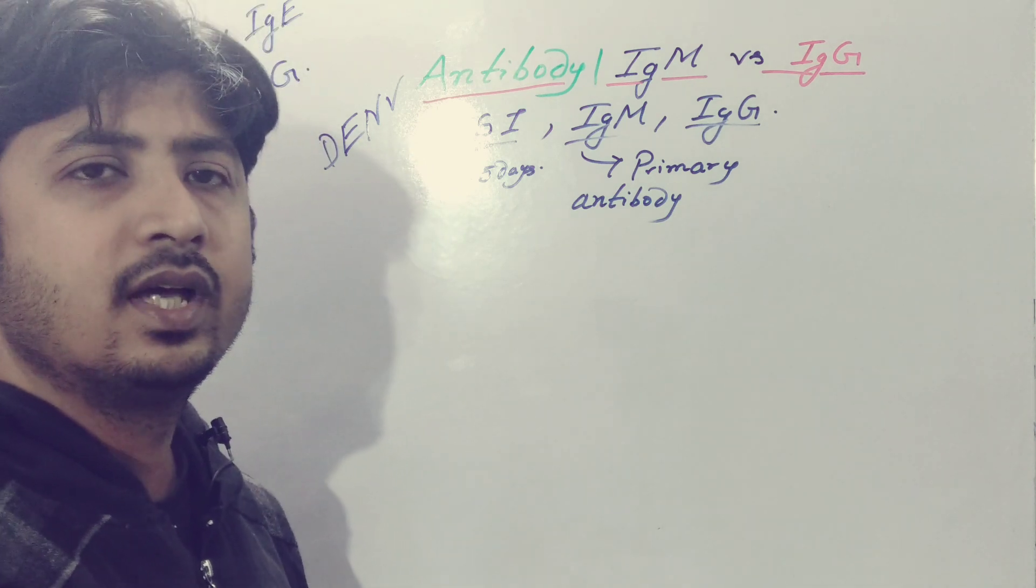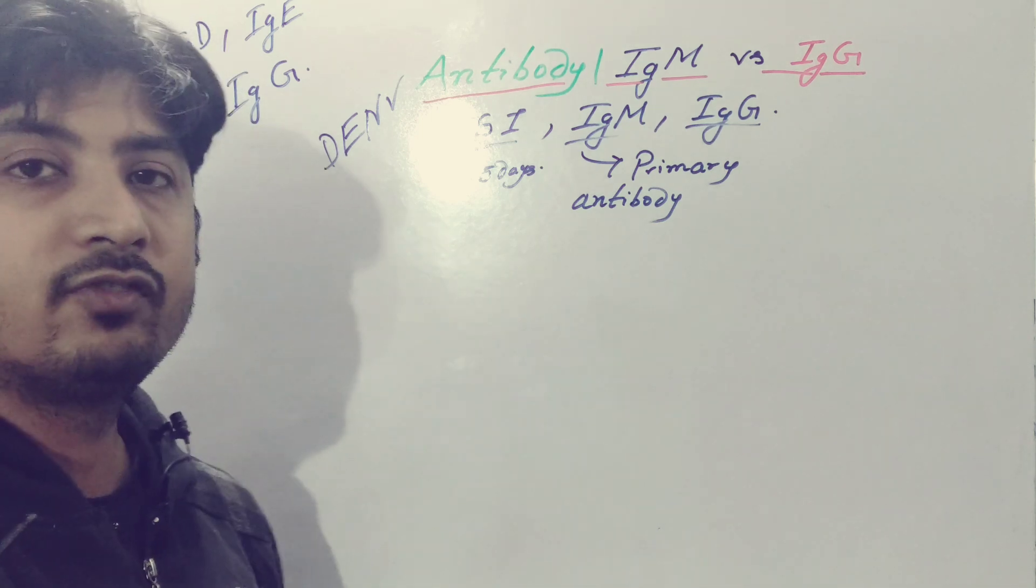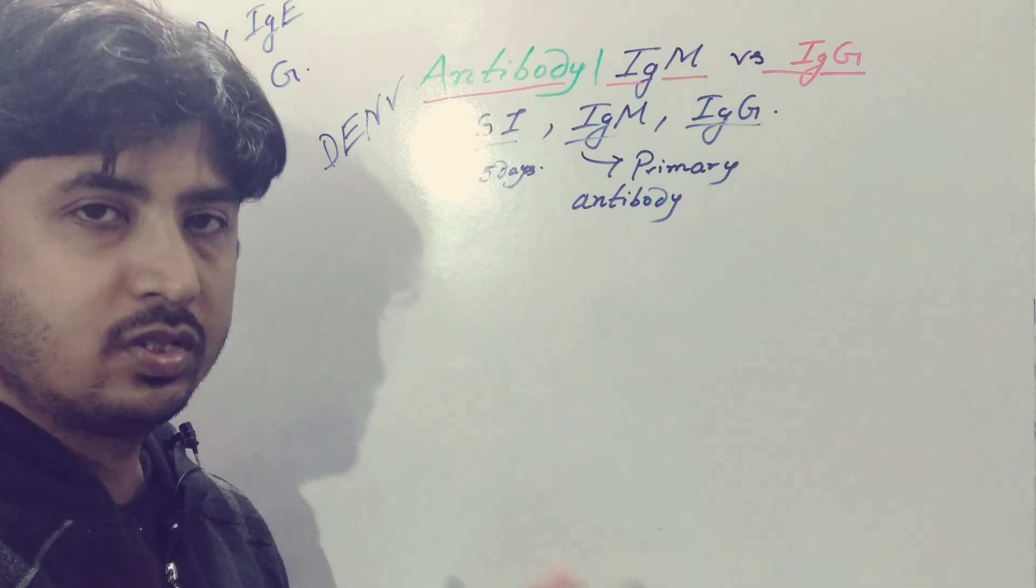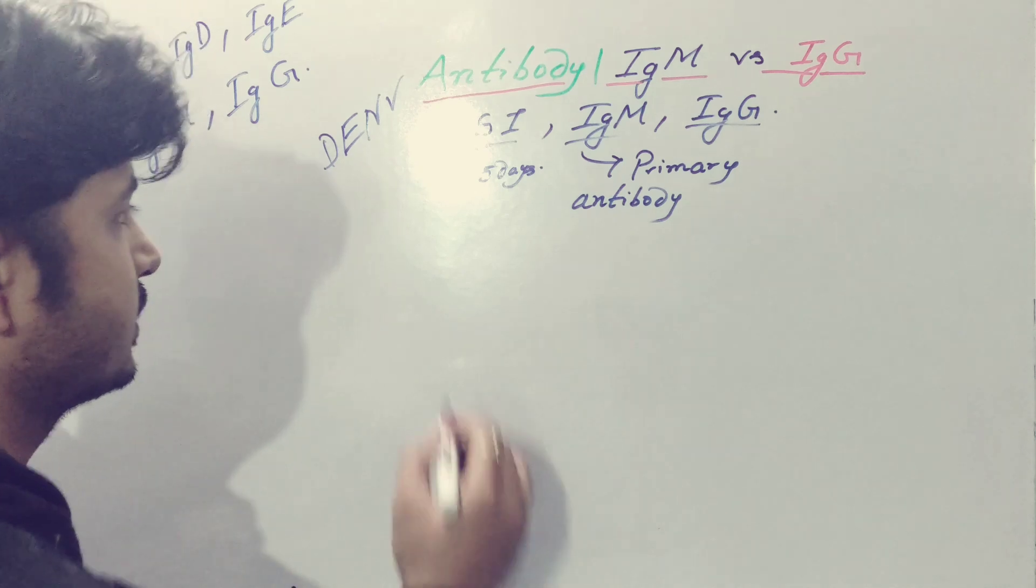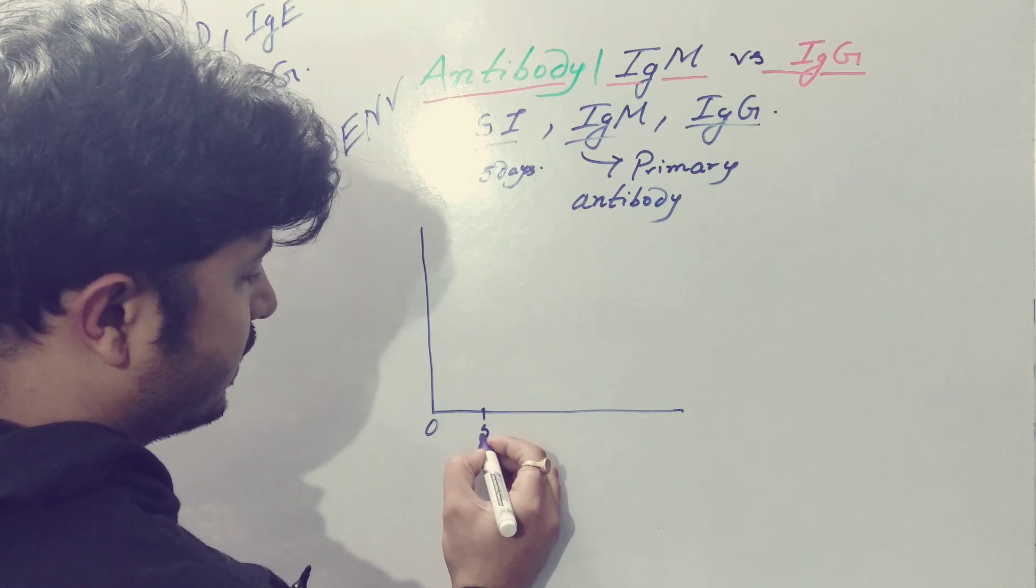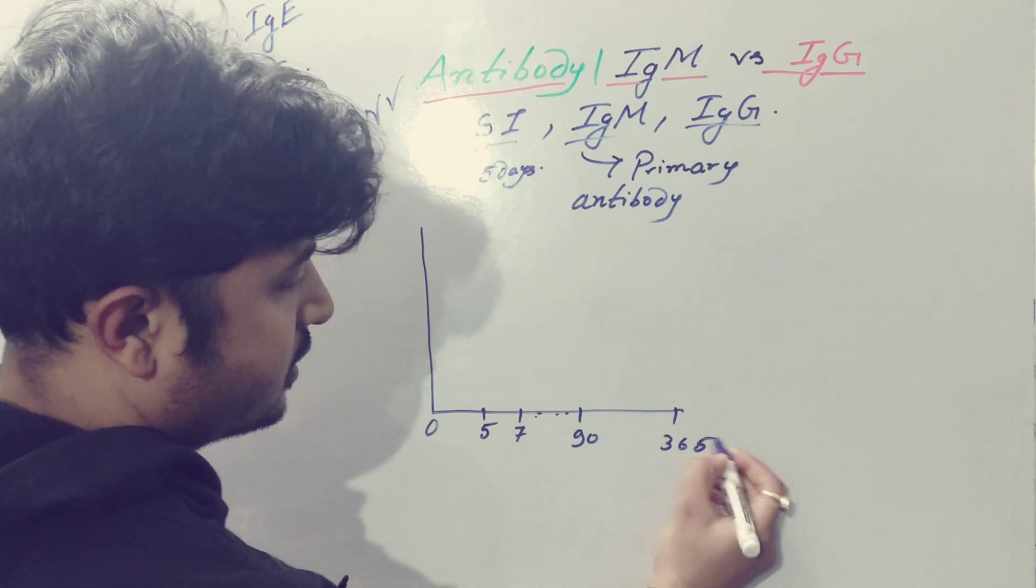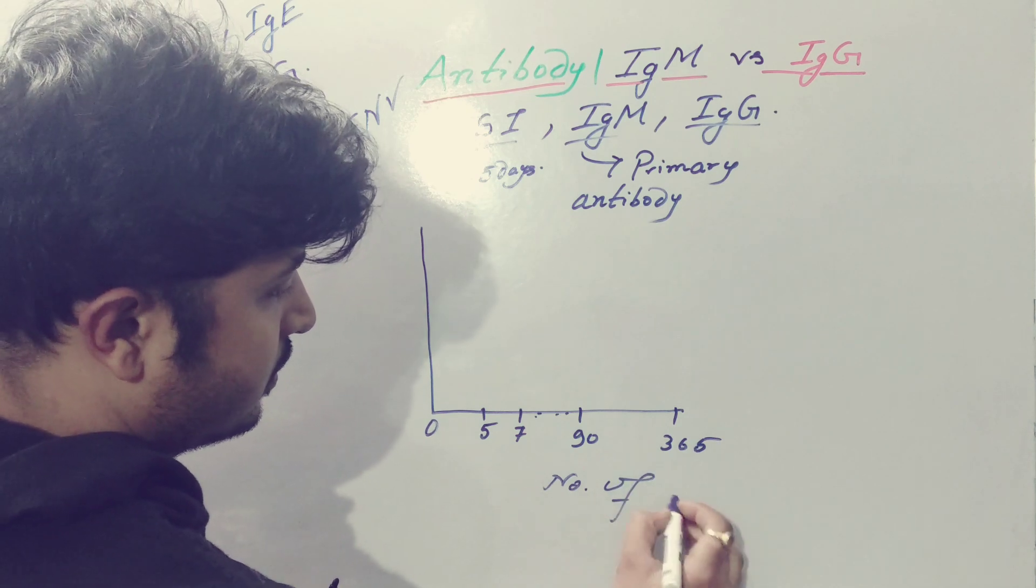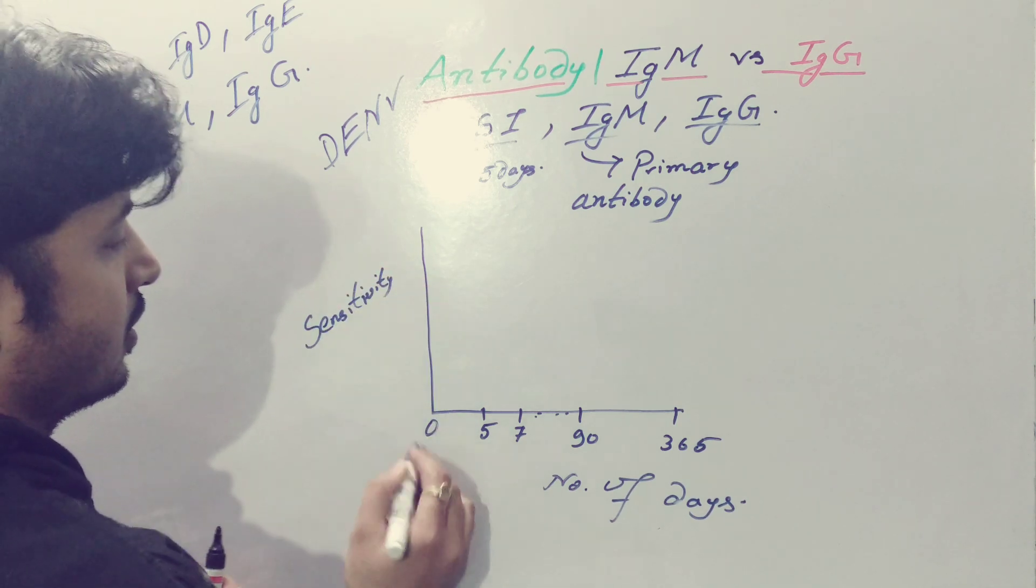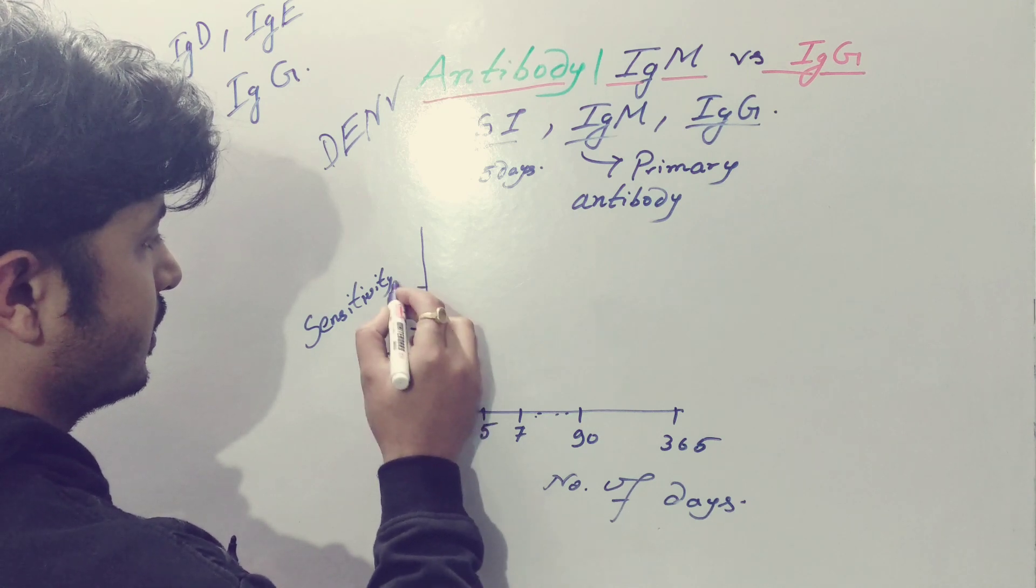You'll be detecting IgM through ELISA kits which are very standard nowadays. This IgM, which is the first response against the particular antigen, will have a peak that differs from IgG. I'll draw a graph so you can understand properly. Suppose these are the number of days: 5, 7, up to 90 days and 365 days. And this is sensitivity: 25%, 50%, 75%, and 100%.